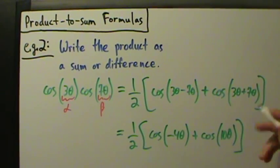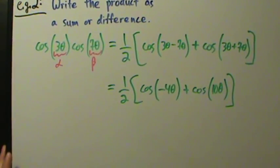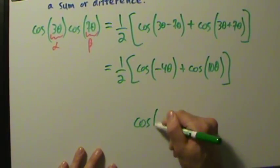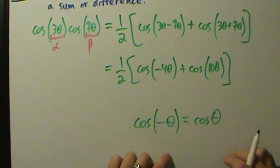There's one more tiny thing we can do to simplify. Remember, cosine is an even function, so cosine of negative θ equals cosine of θ for every value of θ.